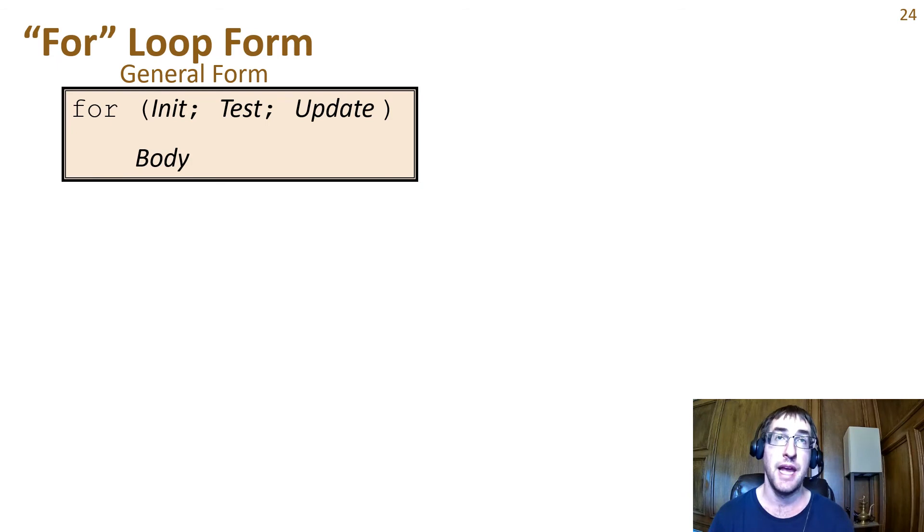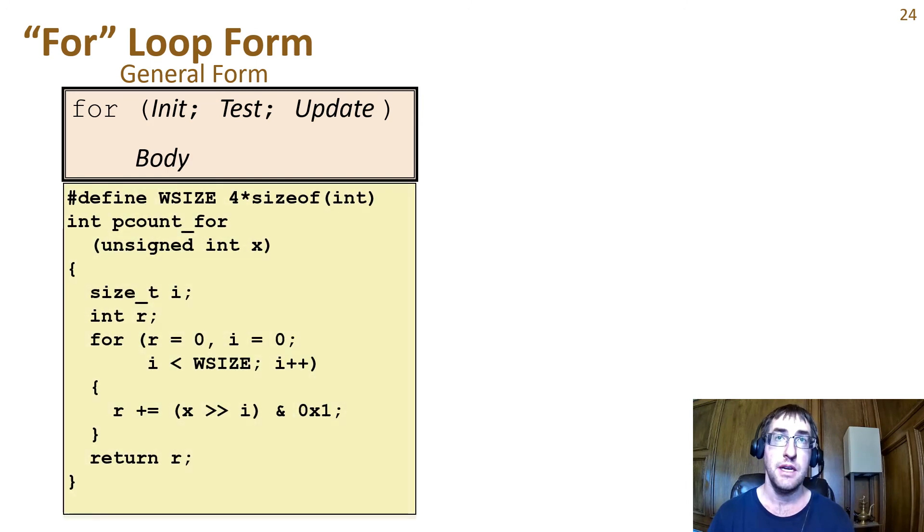Last but not least, we have the for loop. Remember that a for loop consists of four components. The init statement always runs prior to the loop. The test statement runs prior to each loop body and breaks the loop if the test is false. The update statement runs at the end of every loop body. So a loop iteration is a test, body, and update. Here is a slightly different approach to writing popcount using a for loop. The init statement initializes two variables, r and i, to zero.